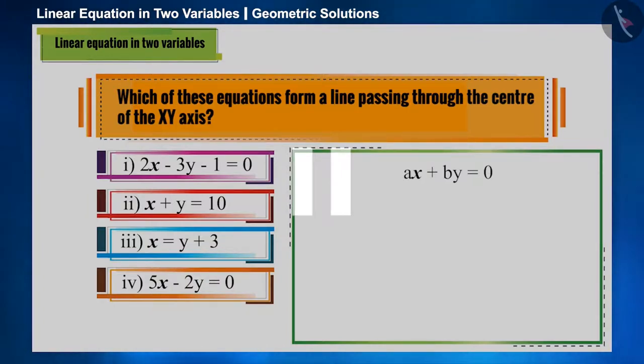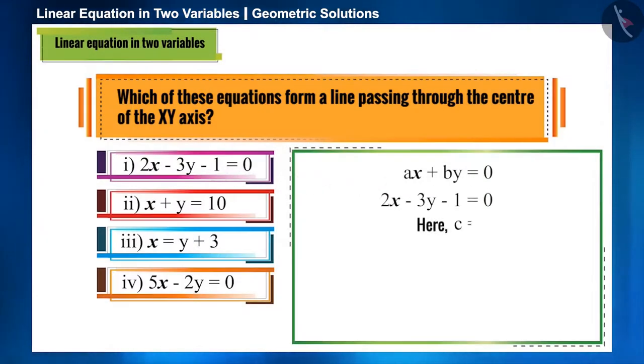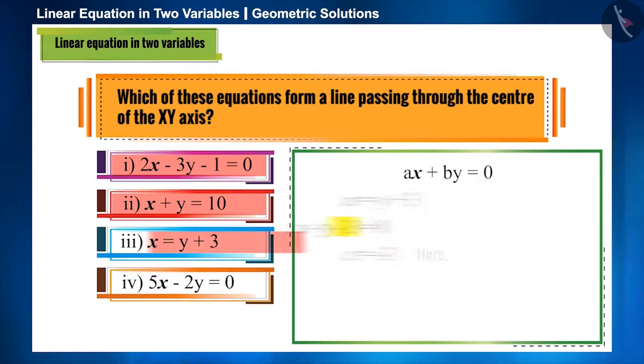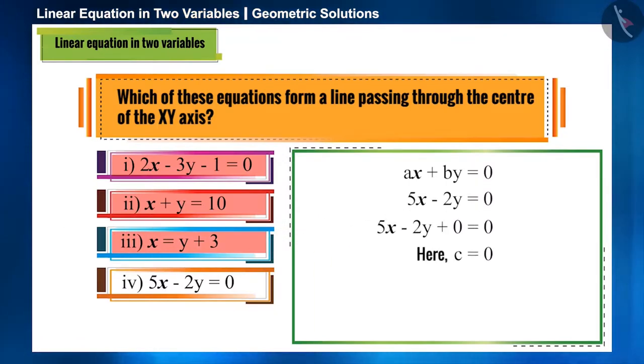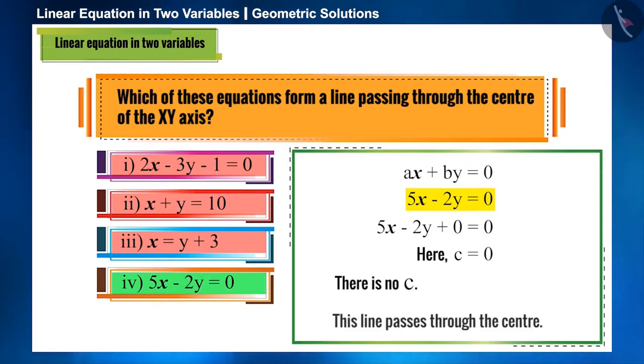Friends, among the given options, only in the fourth option c is zero, or there is no c. Therefore, we can say that the line formed by the equation 5x - 2y = 0 passes through the center of the XY axis.